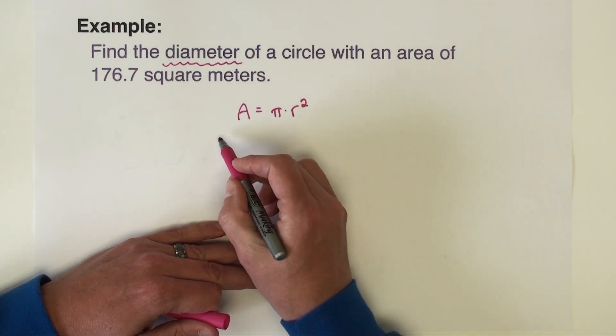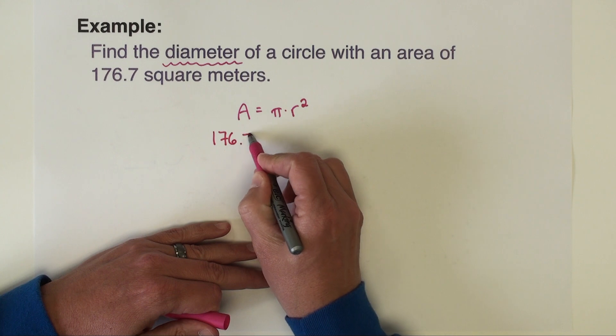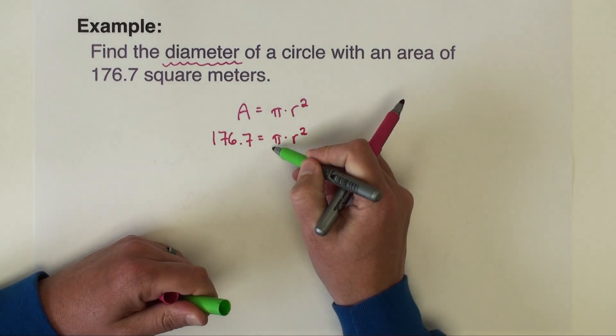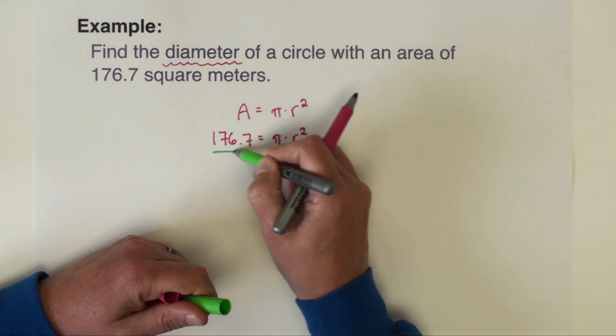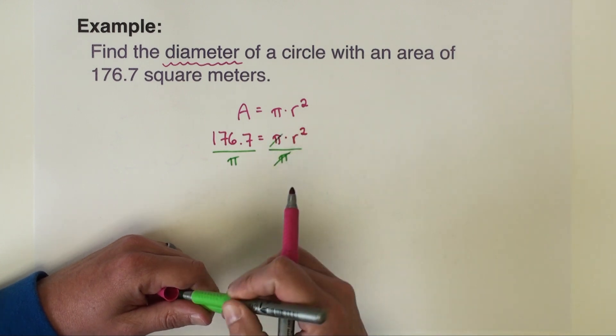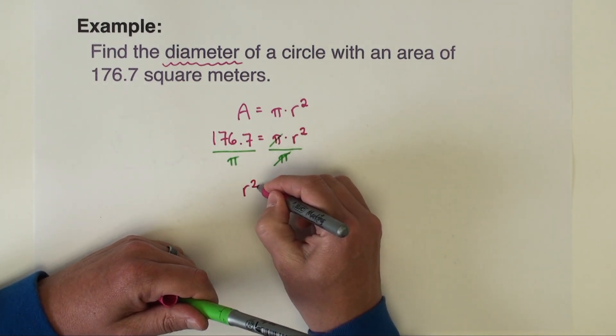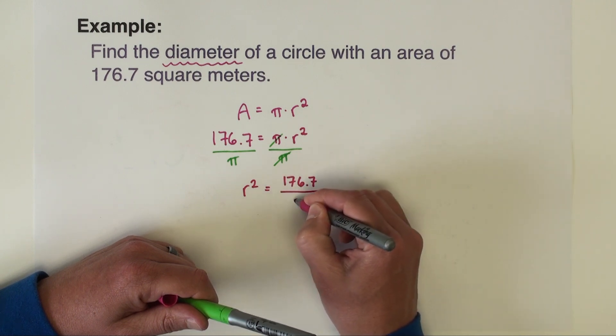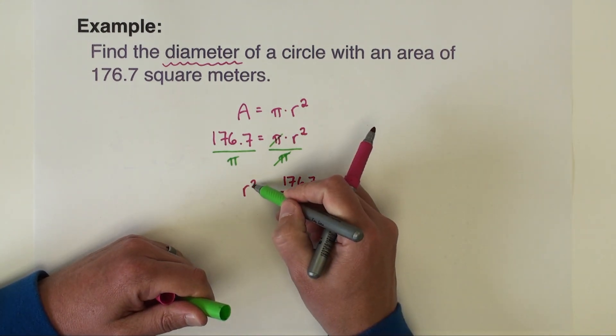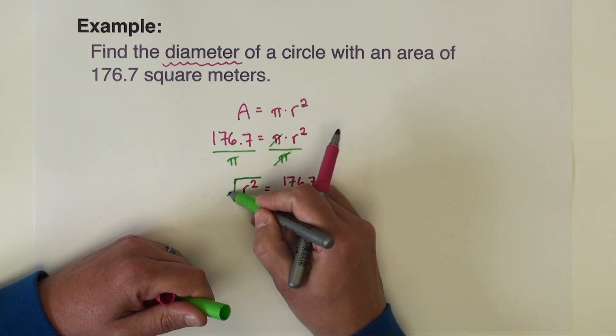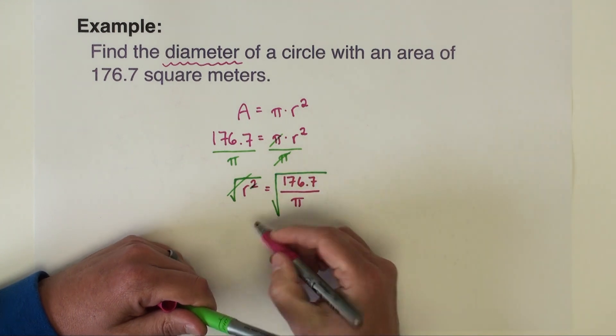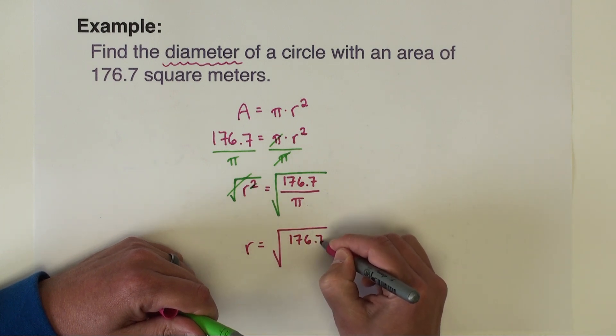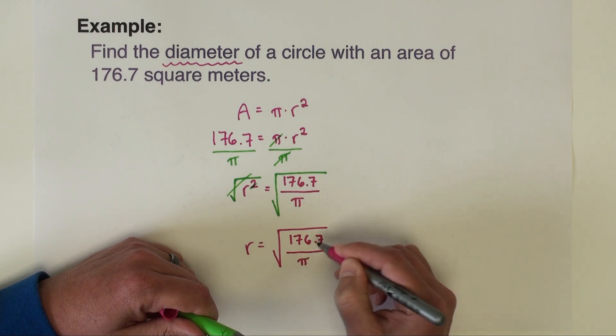So let's plug in our area. 176.7 equals pi times radius squared. We need to divide both sides by pi. So our radius squared equals 176.7 divided by pi. And then we need to get the square off of there, so we will now take the square root of both sides.